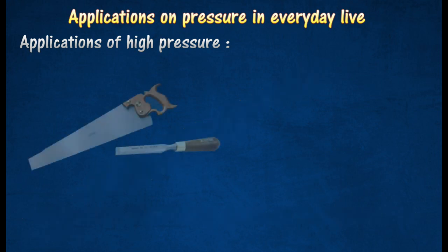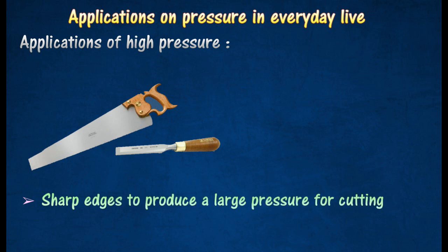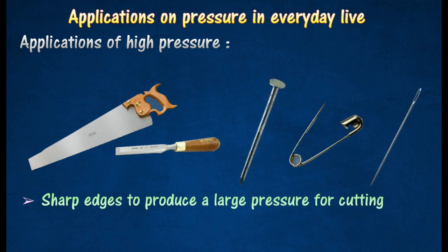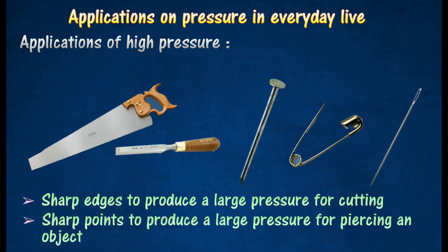Saws, chisels and planes have sharp edges to produce a large pressure for cutting. Nails, pins, and needles also have sharp points to produce a large pressure for piercing an object easily.